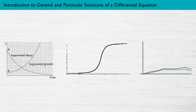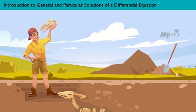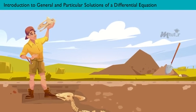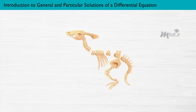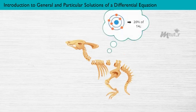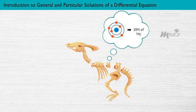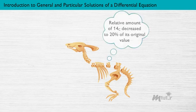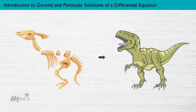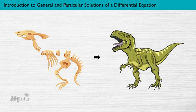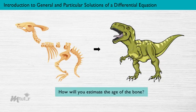For example, imagine you are an archaeologist and you find a bone in an empty land. The fragment of bone discovered contains 20% of the usual carbon-14 concentration. That is, the relative amount of carbon-14 in the bone has decreased to 20% of its original value, compared to when the animal was alive. Using this information, how will you estimate the age of the bone?